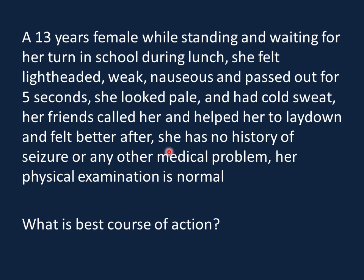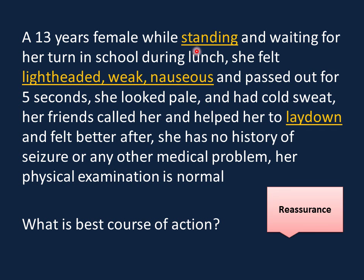This is a 13-year-old female who, while standing and waiting for her turn at school during lunch, felt lightheaded, weak, and nauseous, then passed out for five seconds. She looked pale and had cold sweat. Her friends helped her lay down and she felt better. She has no history of seizures or other medical problems, and her physical examination is normal. The key point is that she passed out while standing — not during running or swimming — and she had a typical prodrome of vasovagal syncope.